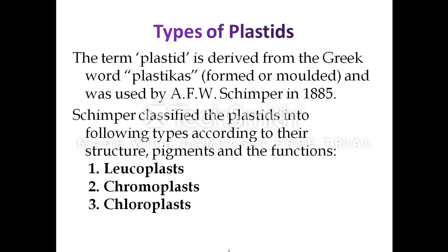The term plastid is derived from the Greek word 'plastikas,' meaning formed or molded. The term was used by Shimper in 1885. Shimper classified plastids into types according to their structure, pigments, and functions. The different types of plastids are leucoplasts, chromoplasts, and chloroplasts.